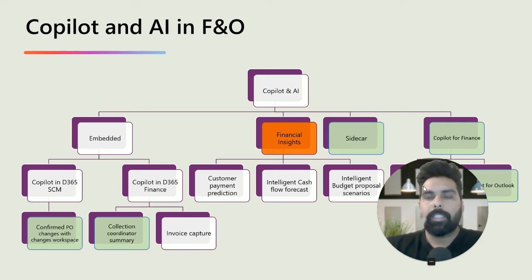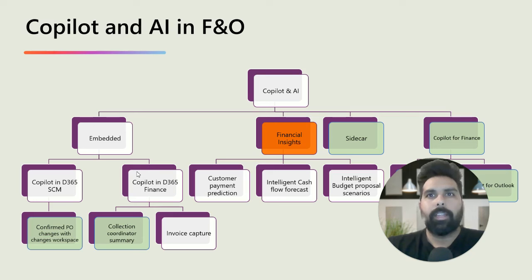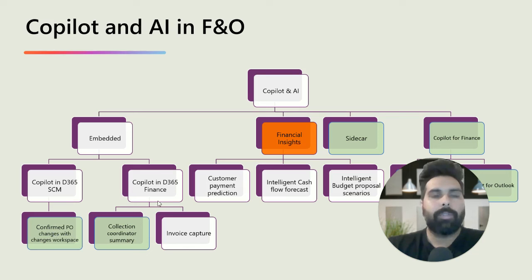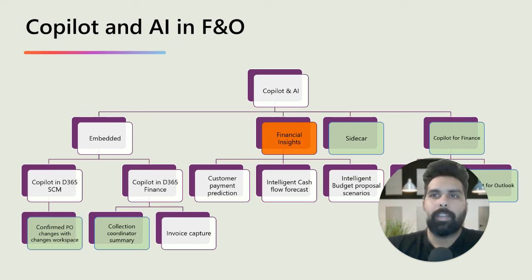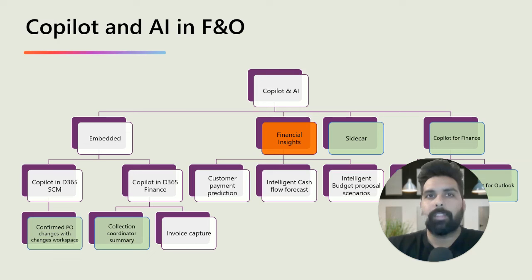When I started the series about copilot and AI capabilities in Finance and Operations, I drew a chart categorizing into four key areas: copilot embedded with supply chain and finance features — like the changes workspace for PO and collection coordinator summary — then a sidecar, and copilot for finance in Excel and Outlook. Today we are going to talk about financial insights, which is not copilot but uses artificial intelligence predictive analysis models.